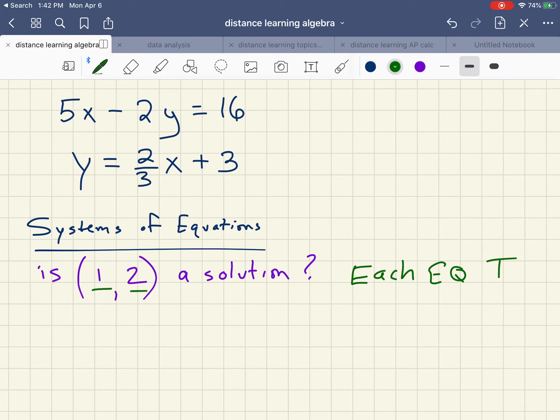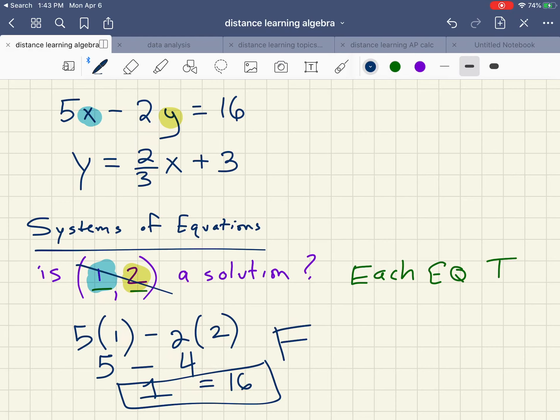So we take the (1,2) and we plug them in for x and for y. We can start with just one equation, it doesn't matter which one. I'm going to use the top equation. So 5 times 1 minus 2 times 2, and I'm going to do that out using the order of operations. This is 5 minus 4, that is 1. Now in the original it is equal to 16. Does 1 equal 16? No. So right there it doesn't work.